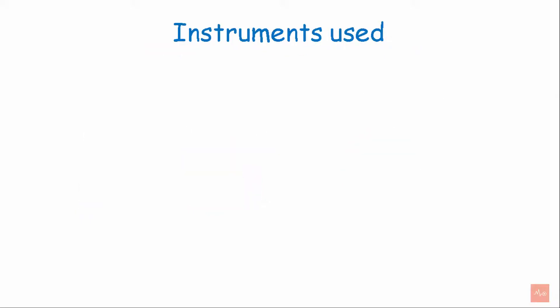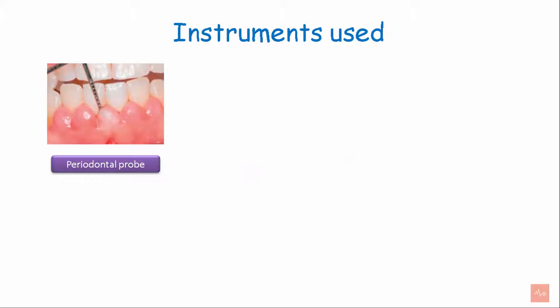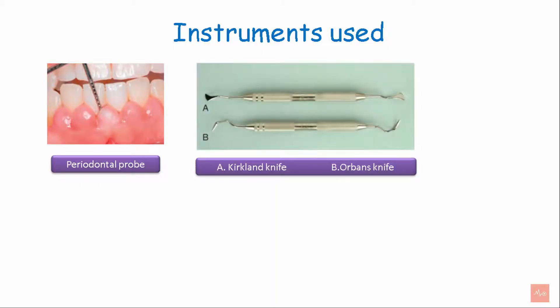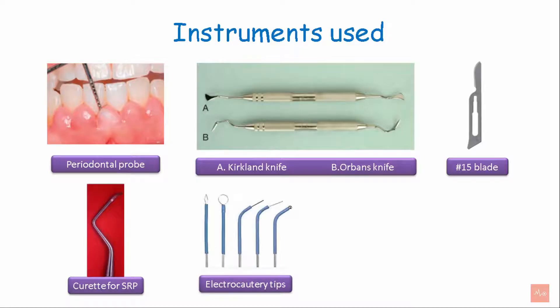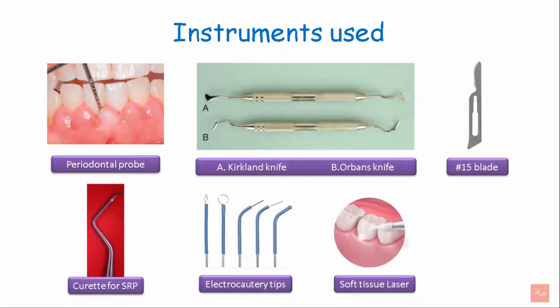Instruments used to perform gingivectomy include the periodontal probe for assessment of pocket depth, the Kirkland and the Orban's knife for excision, number 15 blade, curette for scaling and root planing, electrocautery tips, soft tissue laser, and tissue nippers for gingival recontouring.